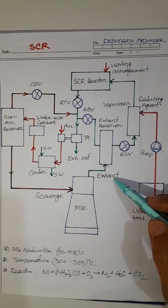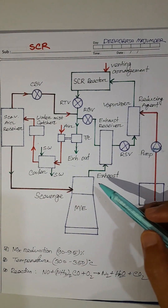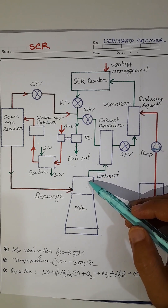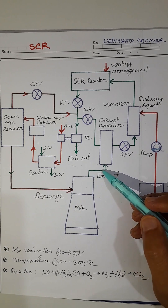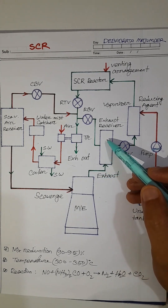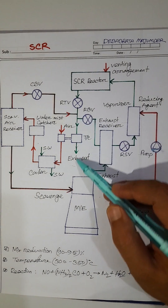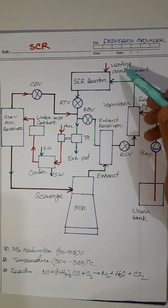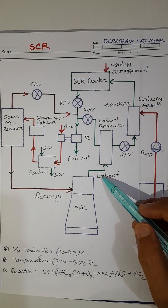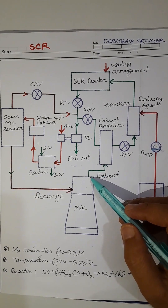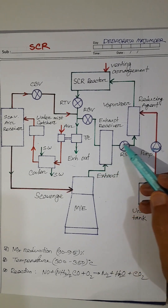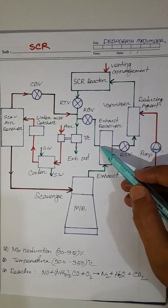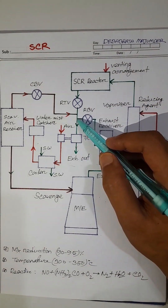In short: when the vessel is running in Tier 2 area, exhaust flow goes here and out, and at that time venting arrangement is done. When the vessel is running in Tier 3 area, the flow goes through the vaporizer, through the reactor, and out through the turbocharger. Some exhaust gas will also be bypassed.